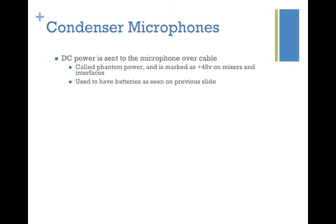The power sent to the condenser microphone is called phantom power, and it's often marked as +48V on mixers or interfaces. Before phantom power existed, microphones actually had batteries inside. When condenser microphones were first developed they weren't very popular because those batteries would die and were expensive or impossible to replace — you were buying a microphone with a determined lifespan. By having phantom power sent over the microphone cable, these microphones became much more viable for studios and helped increase the quality of recordings.